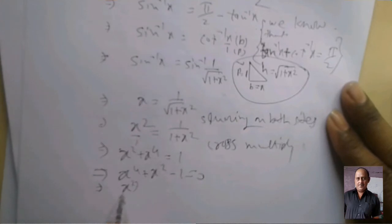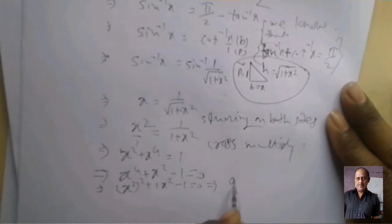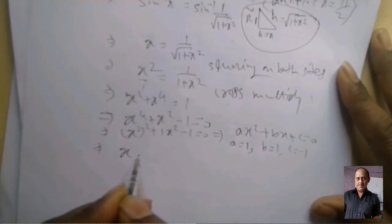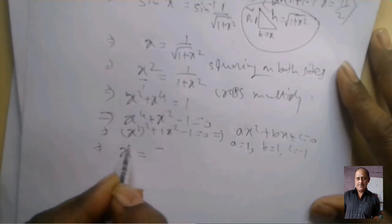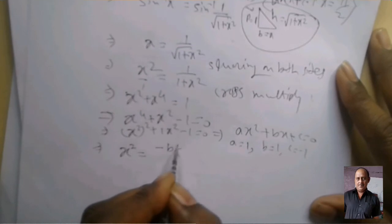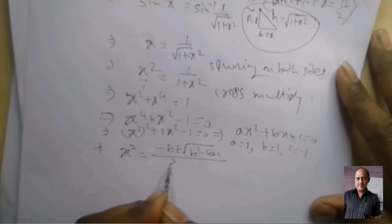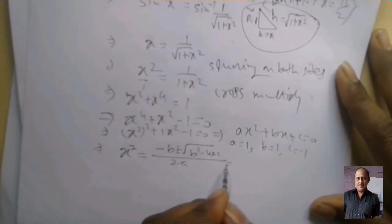(x²)² plus 1(x²) minus 1 equal 0. Here compare ax² + bx + c equal 0, then we get a equal 1, b equal 1, and c equal minus 1. We use formula x equal minus b plus minus root b² minus 4ac upon 2a.